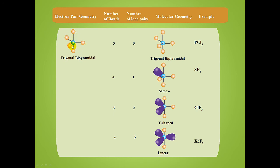When we have a central atom bonded to five atoms, or surrounded by five charge clouds, we have a trigonal bipyramidal electron pair geometry. If there are no lone pairs and the central atom is bonded to five atoms, the molecular geometry is also trigonal bipyramidal. With four atoms and one lone pair, the molecular geometry is a seesaw shape. With three bonds and two lone pairs, we have a T-shape, and two bonds and three lone pairs give us a linear geometry.